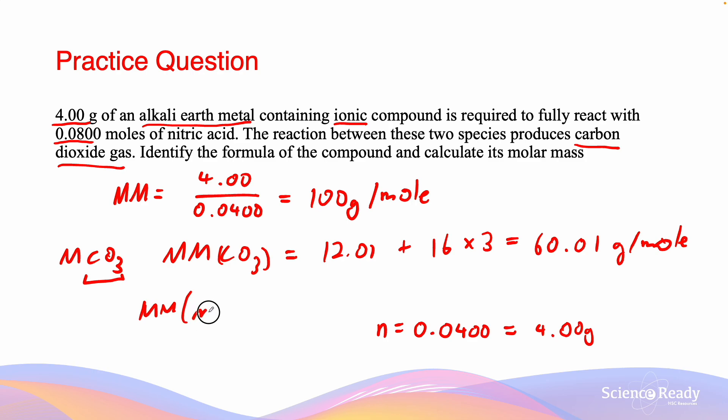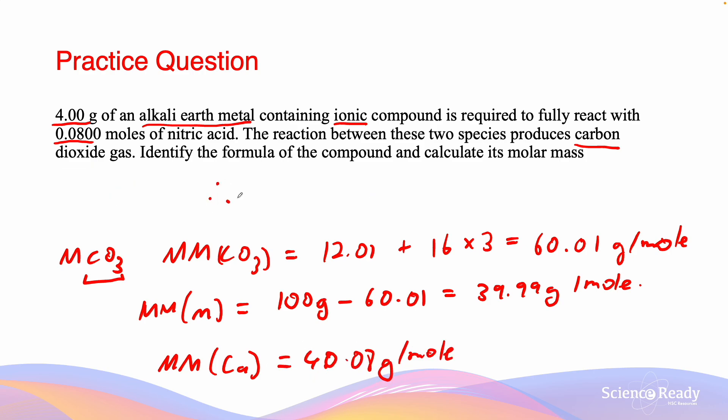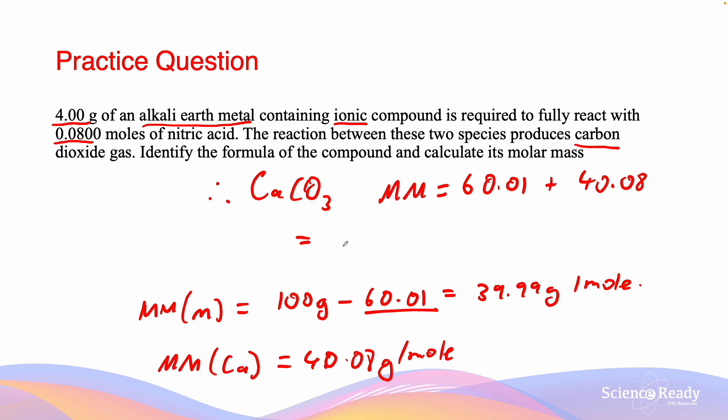The molar mass of the metal equals 100 minus 60.01, which equals 39.99 grams per mole. Looking at the periodic table, this value aligns pretty closely with the molar mass of the alkali earth metal calcium, which equals 40.08 grams per mole. Therefore, the formula is CaCO3, and the molar mass equals 60.01 plus 40.08, which equals 100.09 grams per mole.